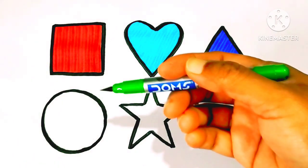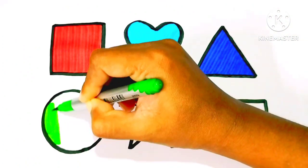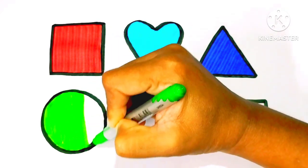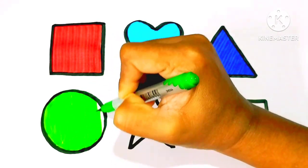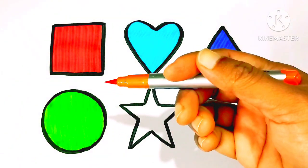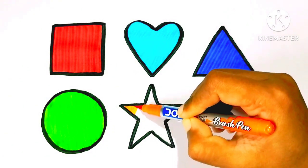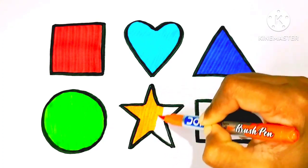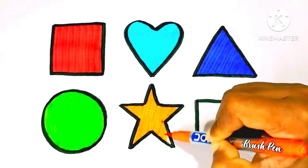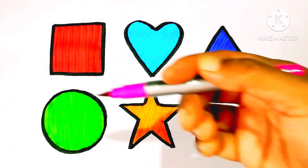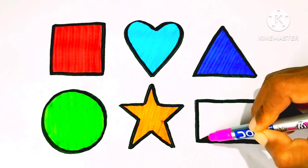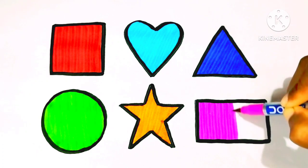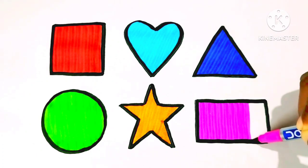Green color. Green color Circle. Orange color Star. Pink color. Green color, Pink color Rectangle.